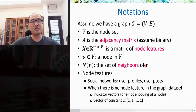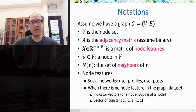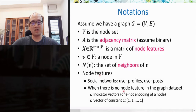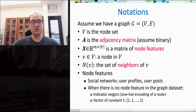Before introducing GNN technical details, here are notations. We have graph G equal to V and E, where V is the node set and A is the adjacency matrix, assumed binary. X is a matrix of node features and v is a node in the node set. N(v) is the set of neighbors of node v. Node features, for example in social networks, are user profiles and posts. When there are no node features in the graph data, we can use either indicator vectors such as one-hot encoding of a node, or a vector of constant ones, as initial node features for GNN.